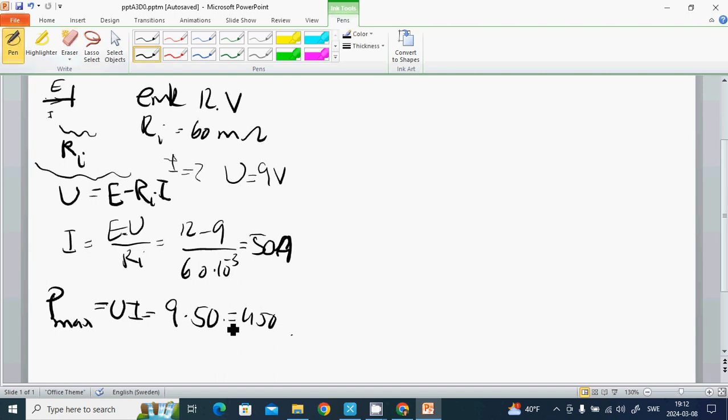What is the warm effect? It is Pi equals Ri times I squared, which is 60 times 10 to the negative 2 multiplied by 2500, and it's going to be 150 watts.